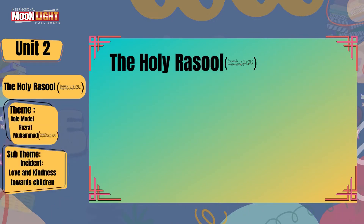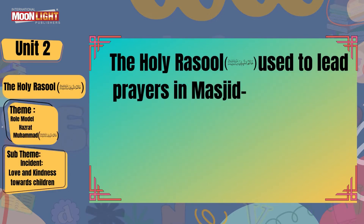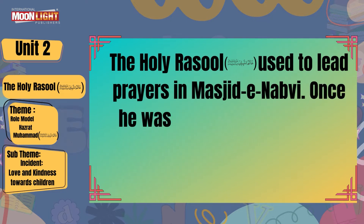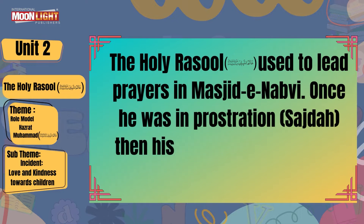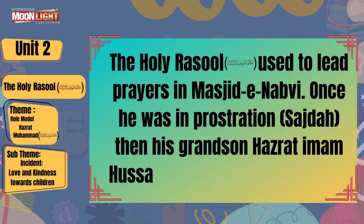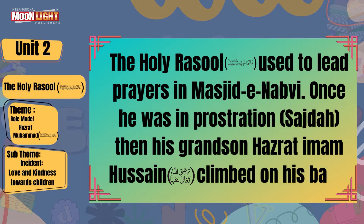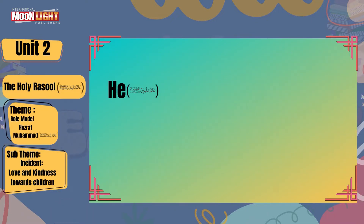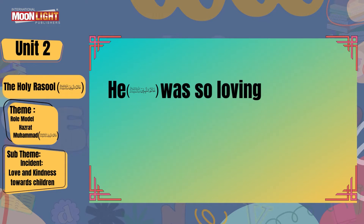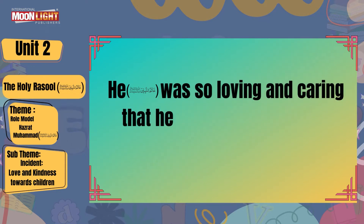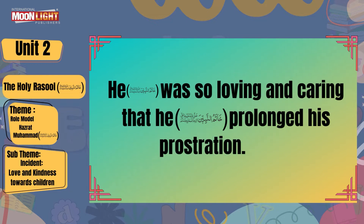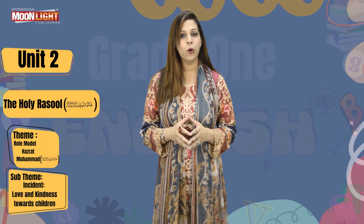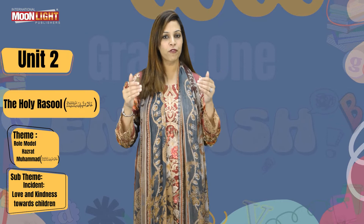The Holy Rasool used to lead prayer in Masjid-e-Nabvi. Once he was in prostration — meaning sajda — when his grandson Hazrat Imam Husain climbed on his back. He salallahu alaihi wa sallam was so loving and caring that he prolonged his prostration. I know that you already know about the Holy Rasool, but from this text you have got more information about this holy personality.